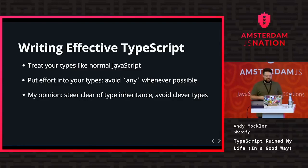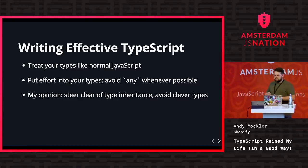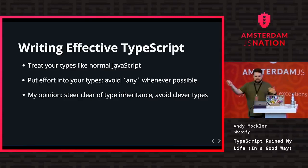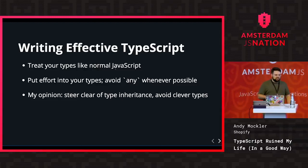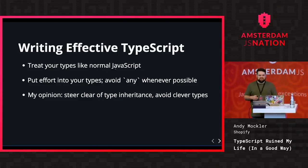In my personal opinion, steering clear of type inheritance is a good idea — try to keep your types really simple and never have long inheritance chains. Also avoid clever types: you can express pretty much anything with the type system, but sometimes those types can be a little too clever and hard to use.